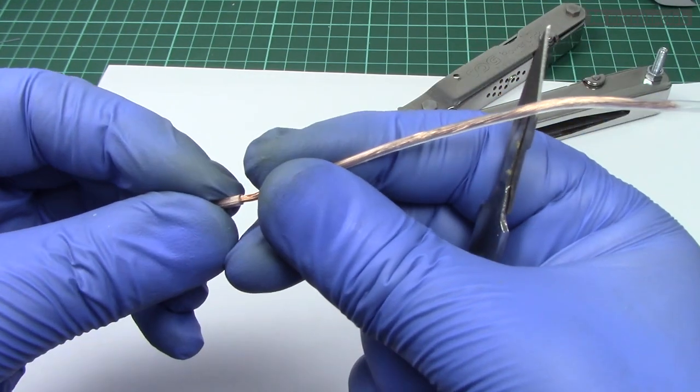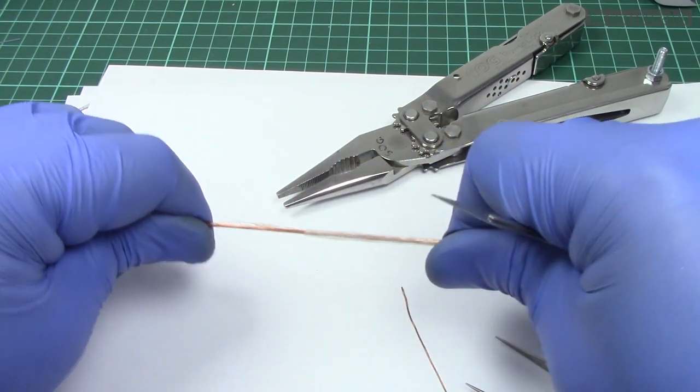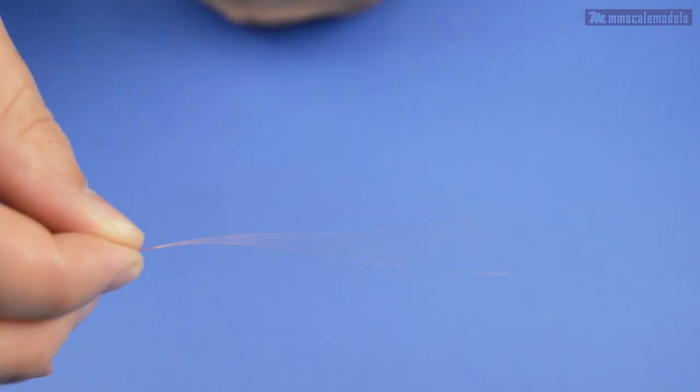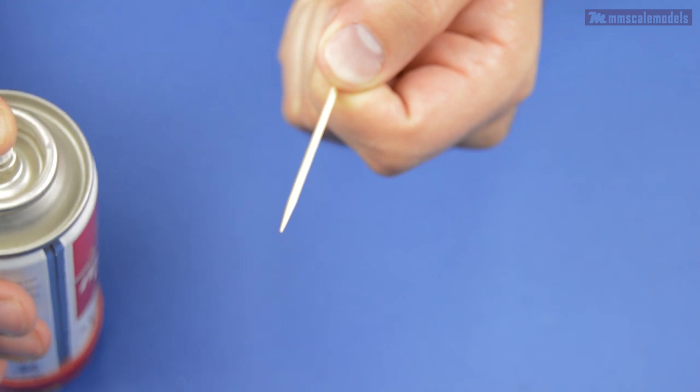At the end of the video I'm going to show you how you can easily clean up the inevitable cured CA glue build up on the tip of the applicator. CA glue kicker comes in handy but it is not absolutely necessary, just makes things easier.